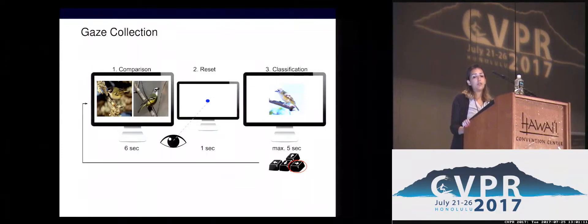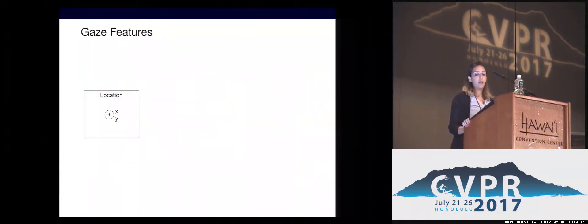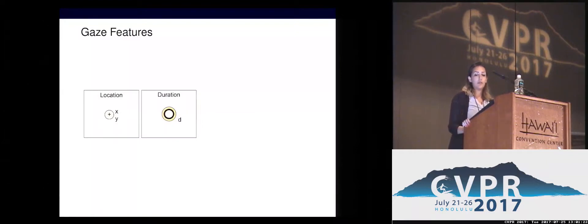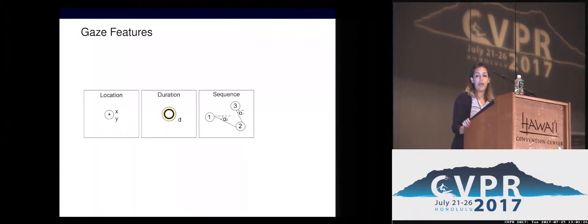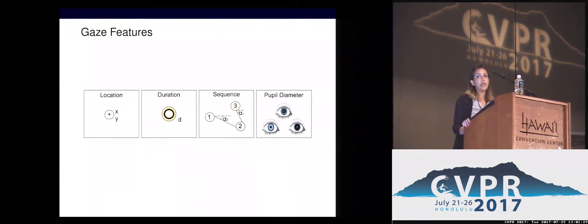We extract four types of gaze features from each point: the location on the image and the duration of the point, sequence information represented by angles, and the pupil diameter, which can indicate the focus level of the participant.